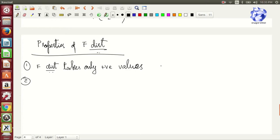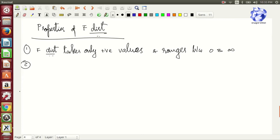It is skewed towards the right, and it approaches the normal distribution when n1 and n2 near infinity.